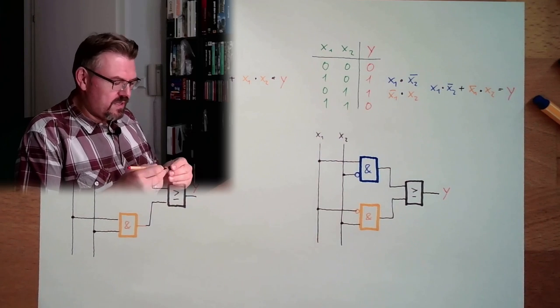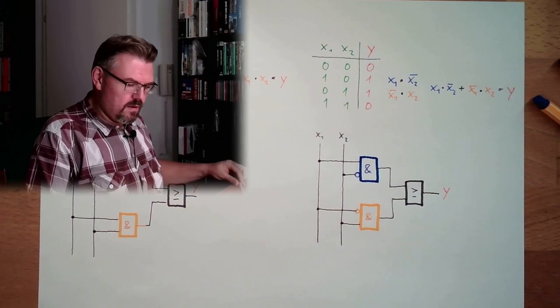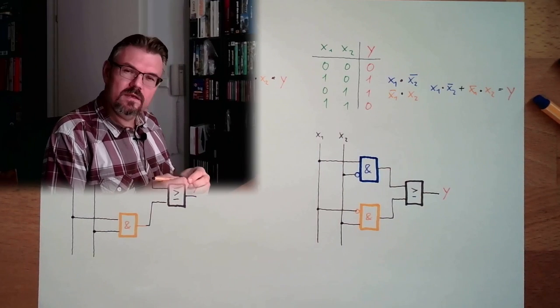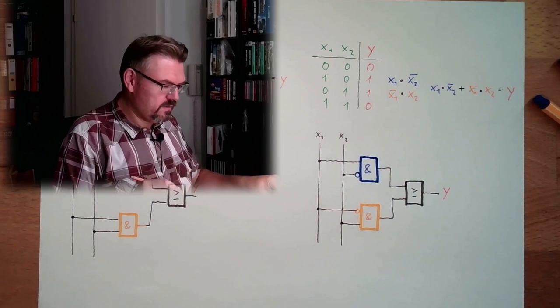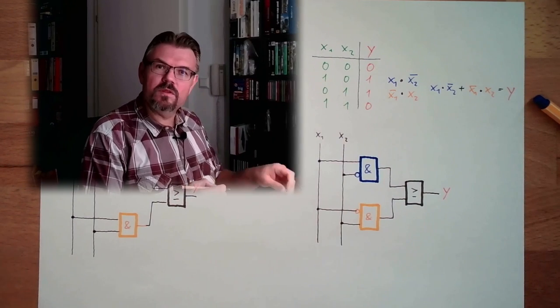These are two examples on how it is working. You see, it's rather straightforward. This is how we derive logic circuits from a table of truth.